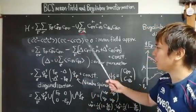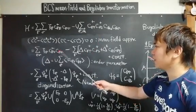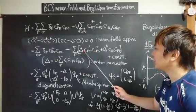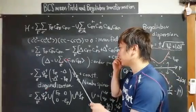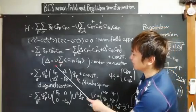This BCS mean field Hamiltonian is now described by bilinear fermionic operators like this. And here delta means the order parameter of the superconductivity defined like this.